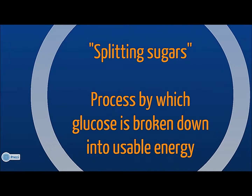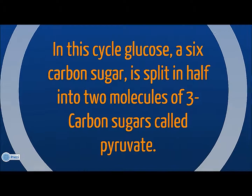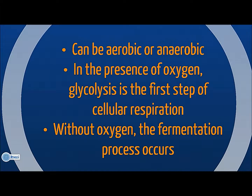Glycolysis is derived from a Latin phrase meaning splitting sugars. It is the metabolic process by which glucose is broken down into usable energy. Glucose, a six-carbon sugar, is broken down into two smaller three-carbon sugars called pyruvate. Glycolysis can happen in the presence of oxygen, aerobic, or not, anaerobic. In the presence of oxygen, glycolysis is the first of three steps of cellular respiration. When no oxygen is present, it is called fermentation.